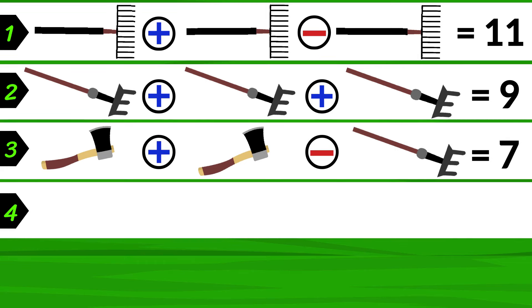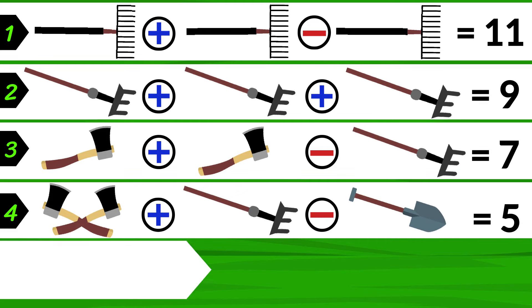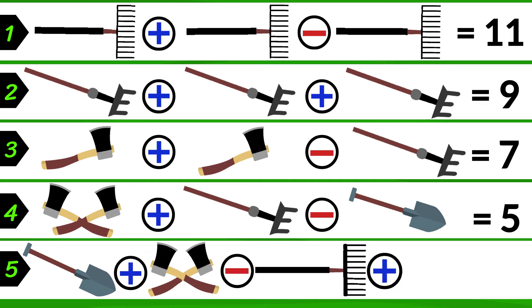The fourth equation is two axes plus a fork minus a shovel is equal to 5. What is the answer for this fifth equation? If you have a shovel plus two axes minus a rake plus a fork, what should it equal to?